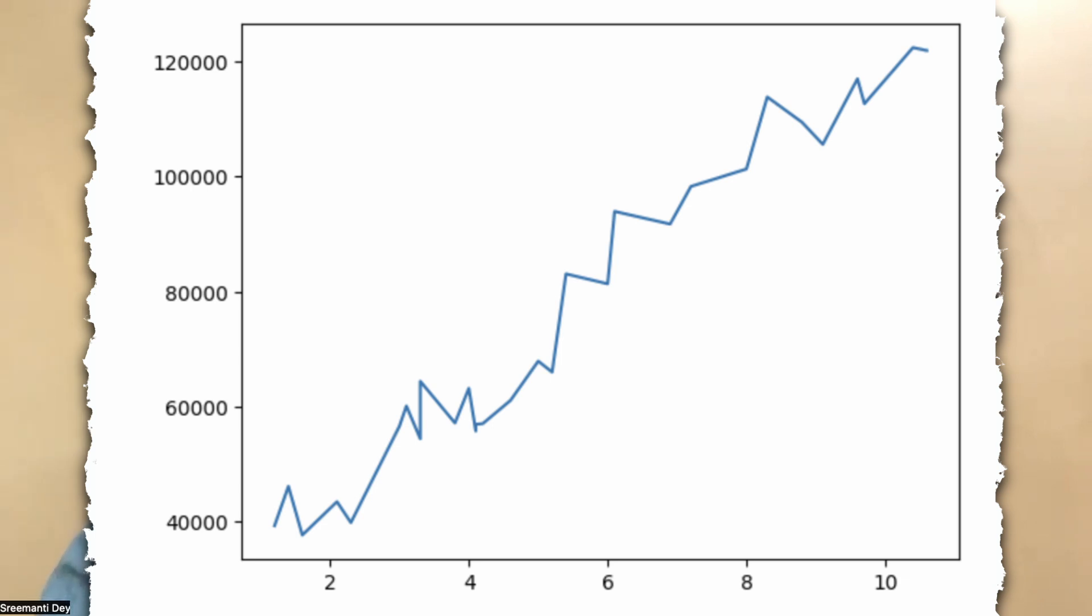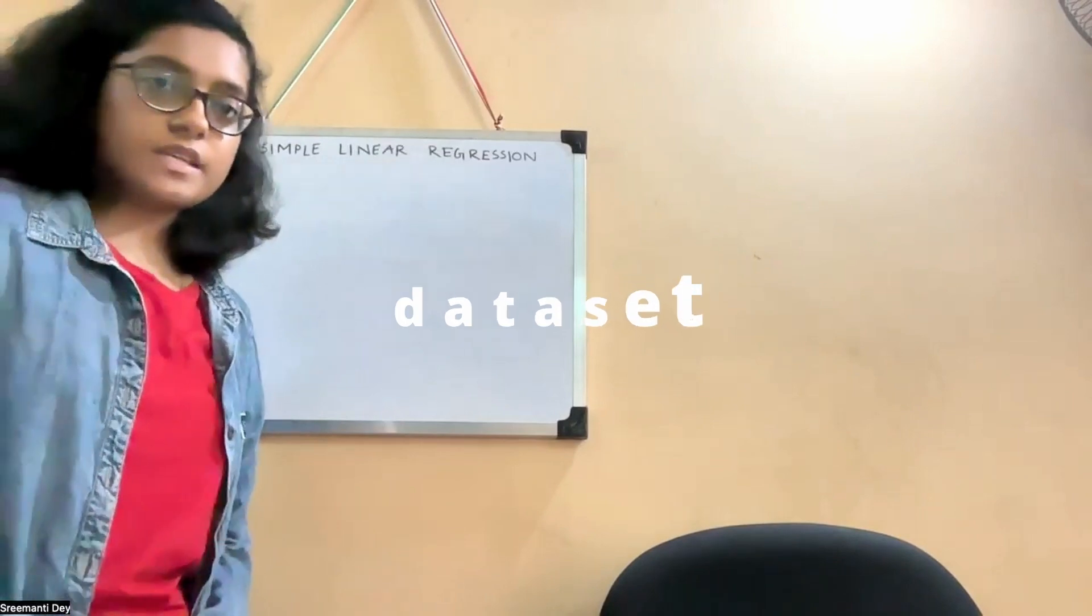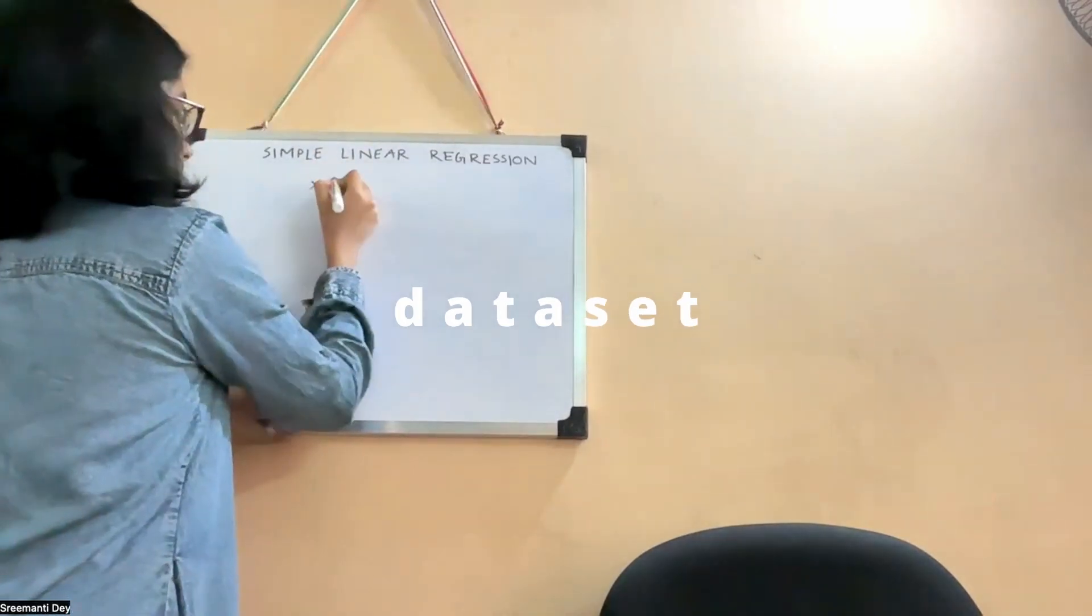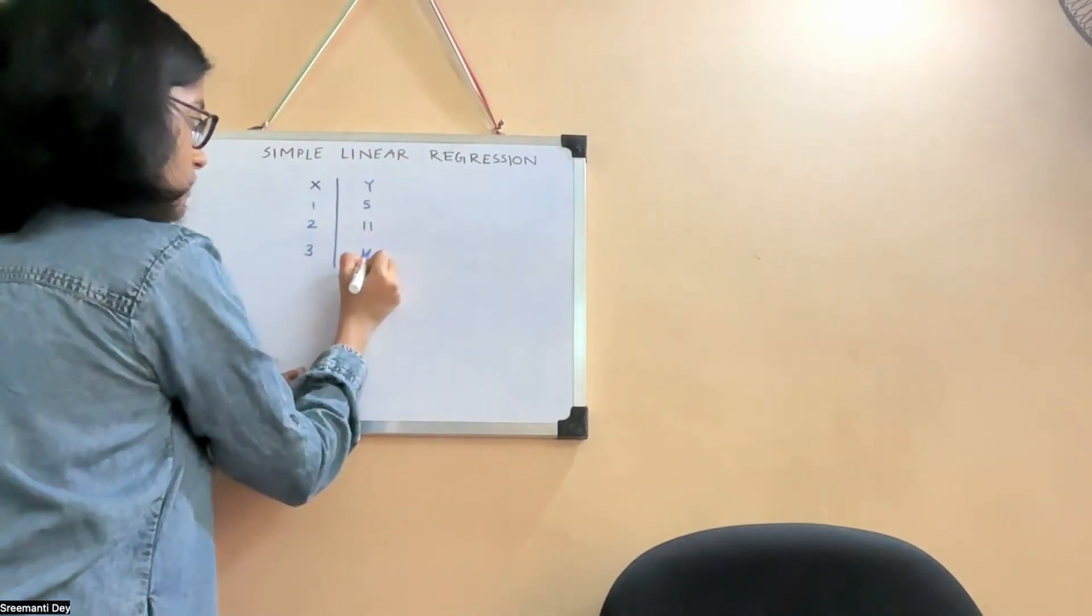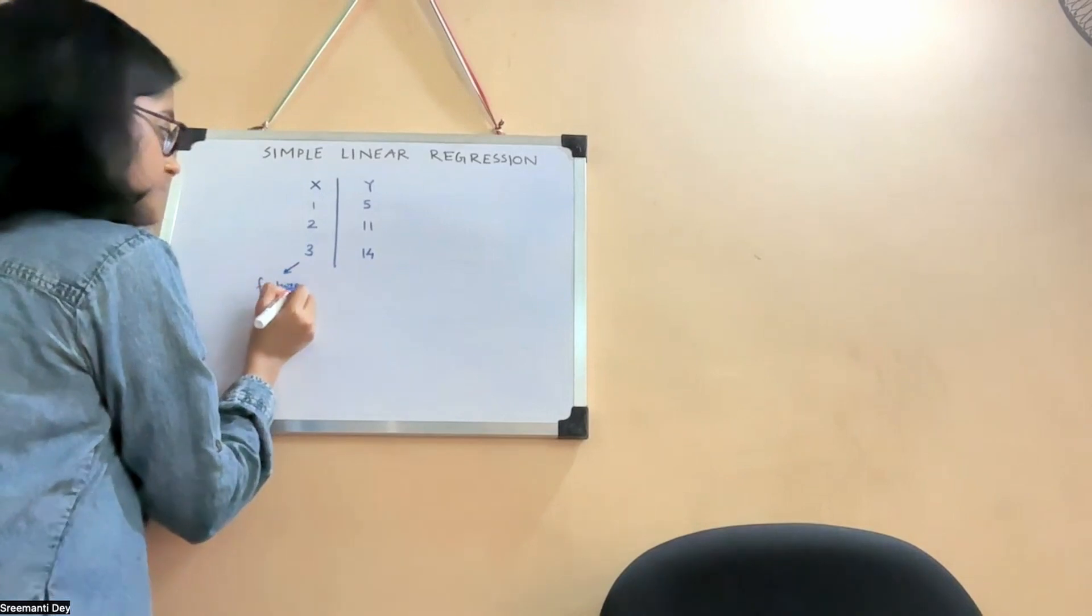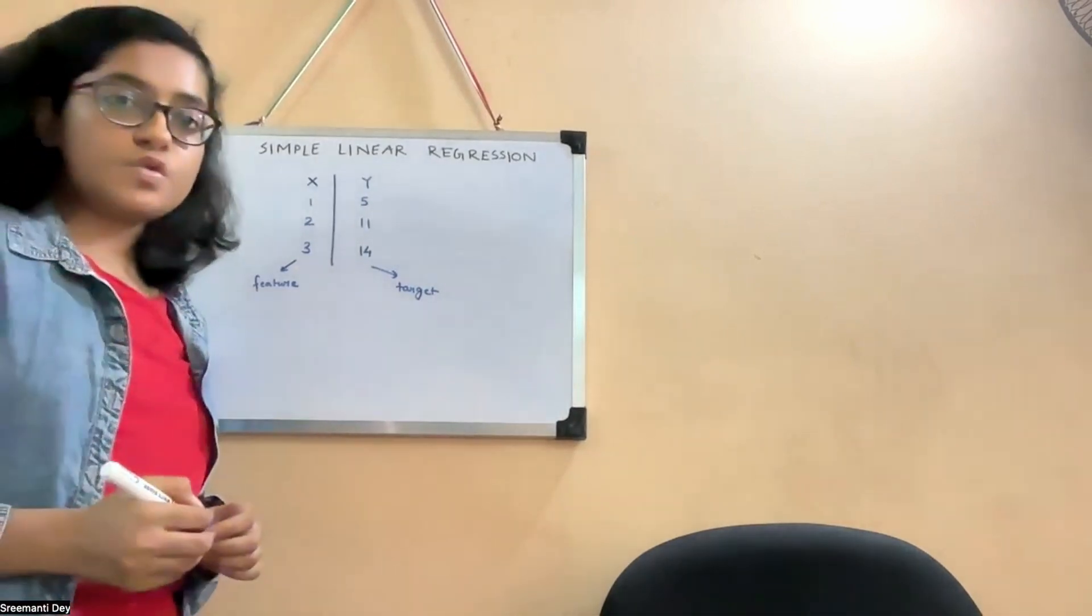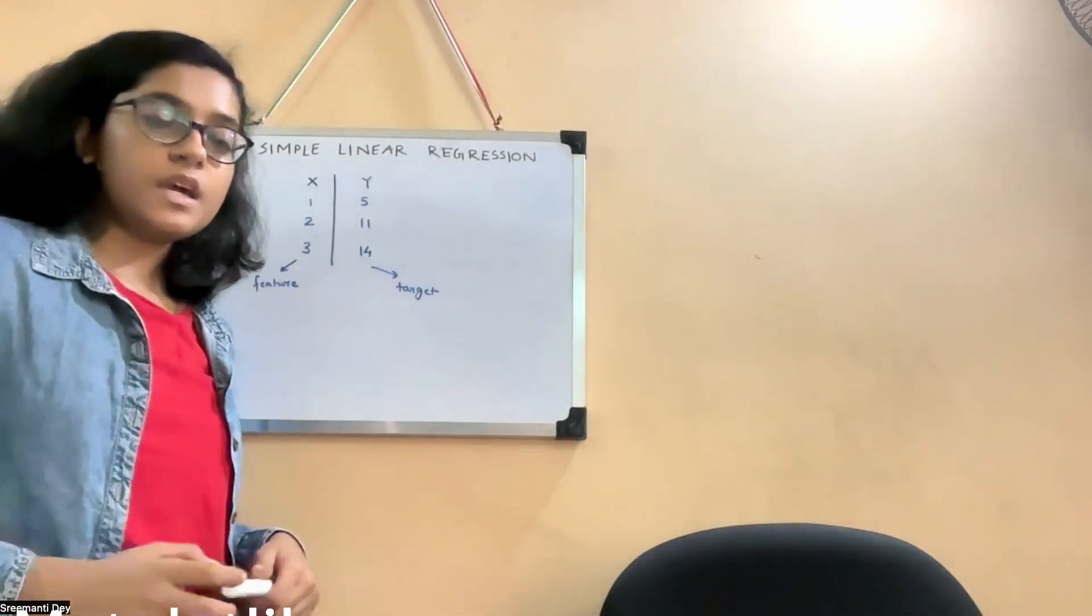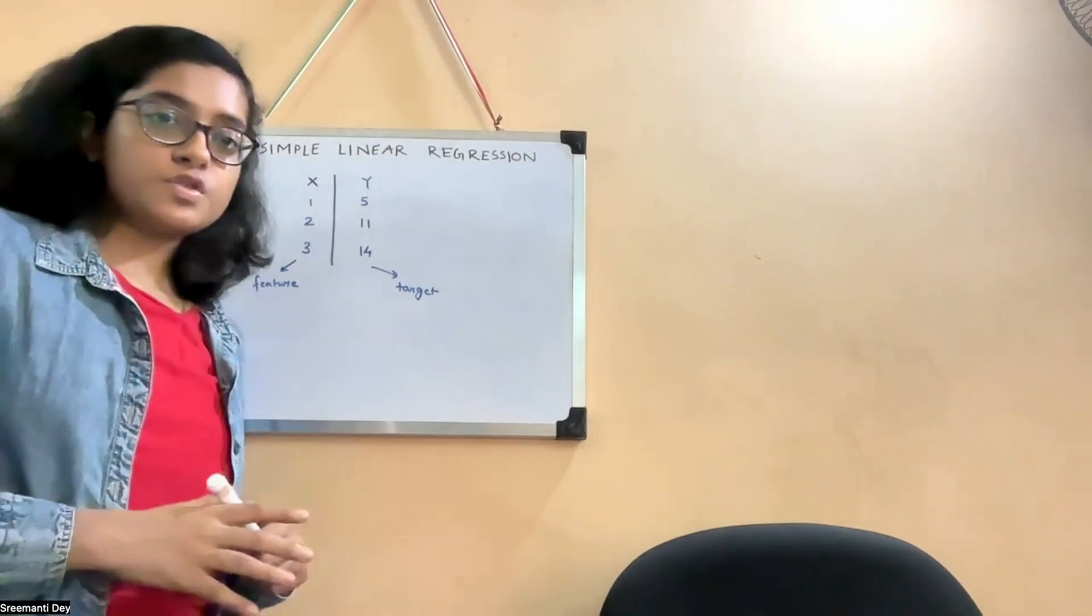Now I'll be talking about an example dataset and I'll show you how we can plot the points, because whenever we deal with any machine learning problem, the first thing is to plot the points. So what kind of dataset are we looking at? This is an example dataset. So this x is the feature, this y is the target. The first thing that we need to do is plot the points.